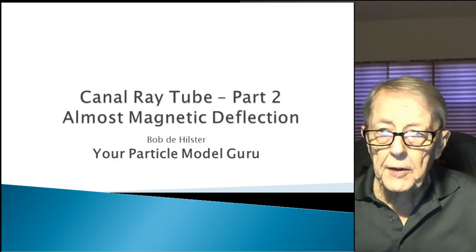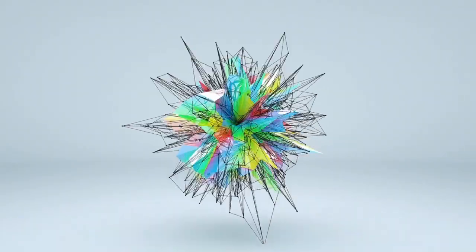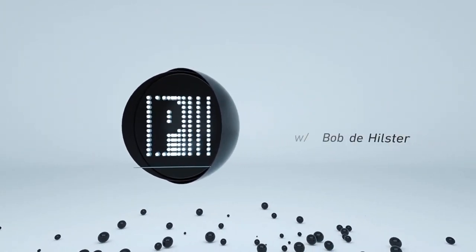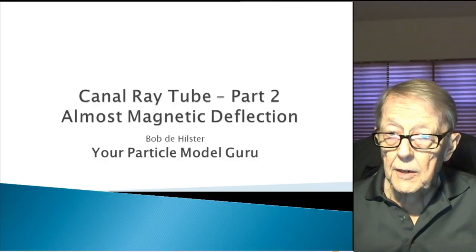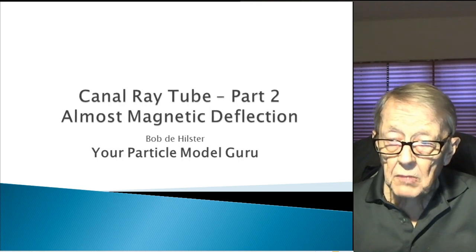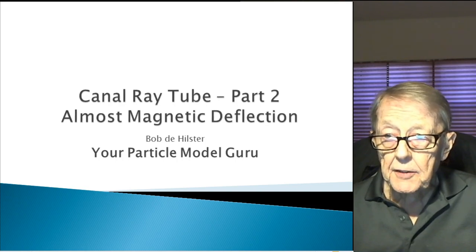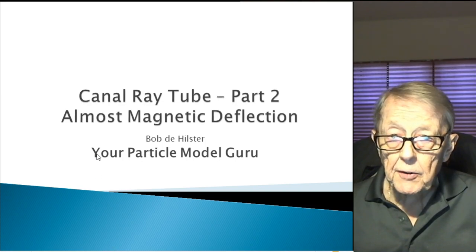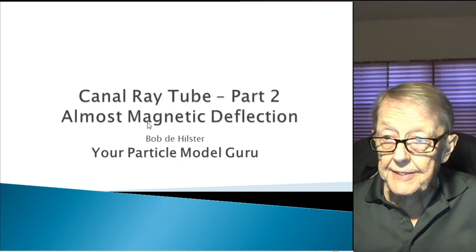Welcome to another video explaining the universe using the particle model. Today's video is part two of discussing the canal ray tube. I hinted at this video saying that there were indications by some information on the internet that the magnetic deflection almost never happens.